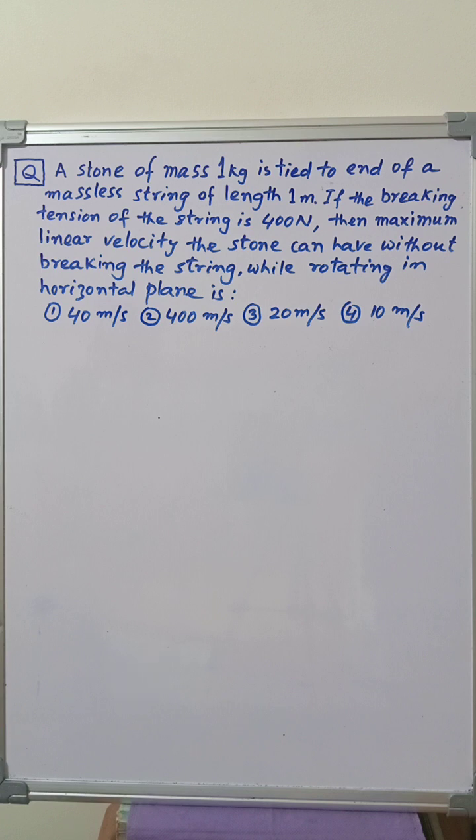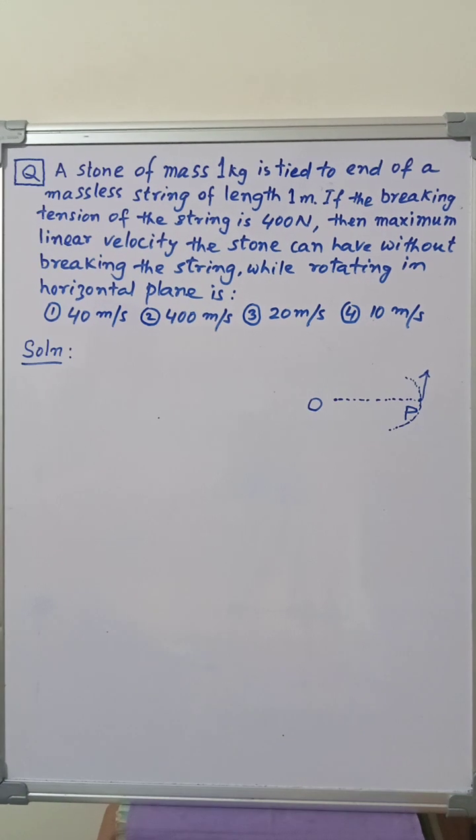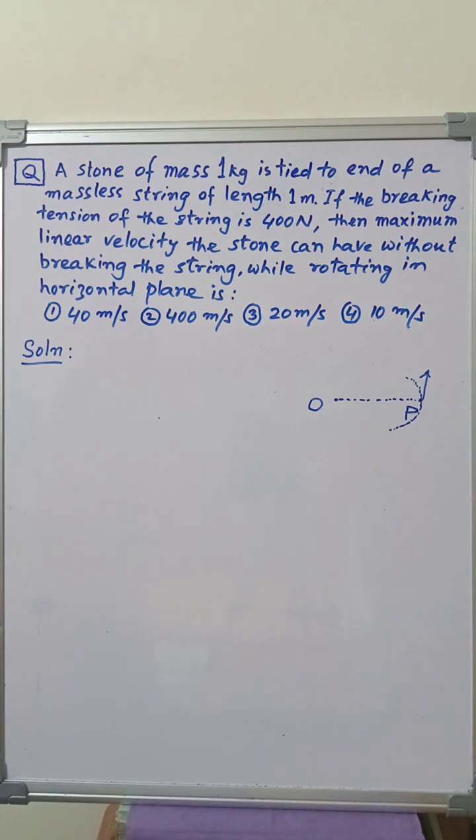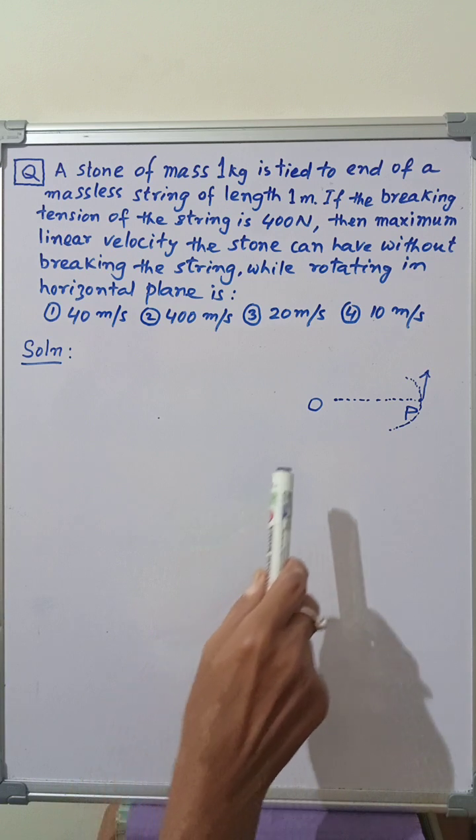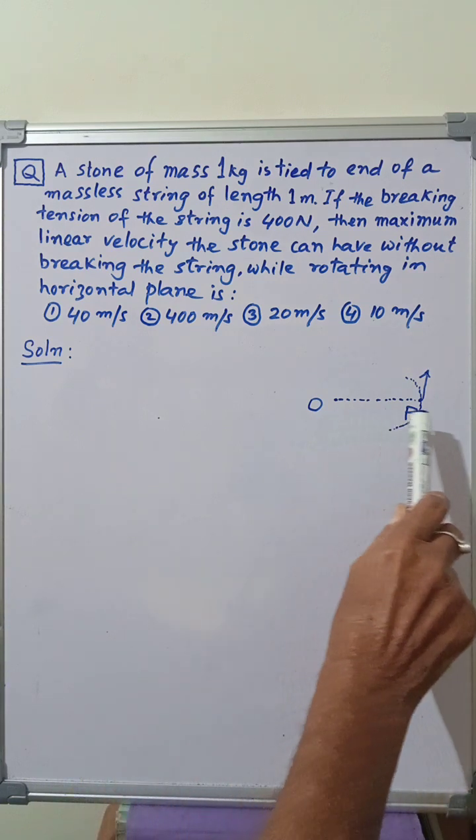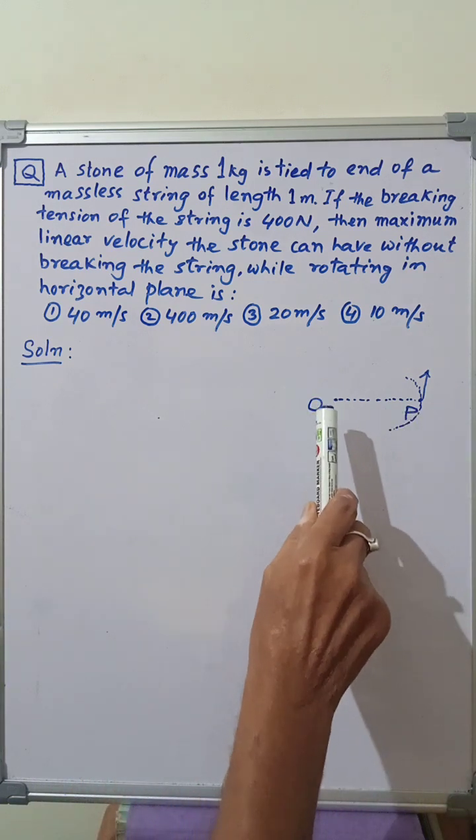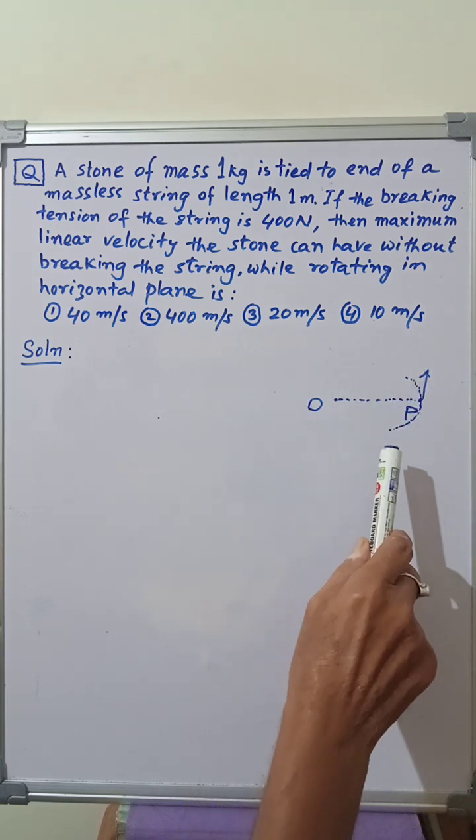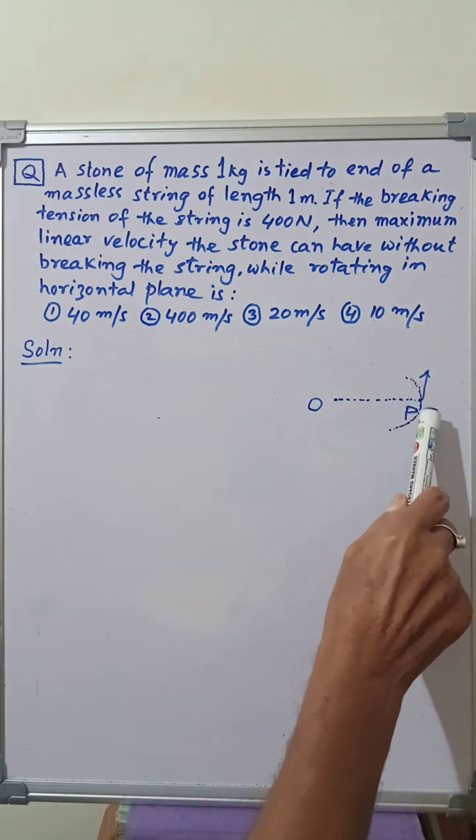Now for the solution. We have drawn a figure to understand the problem better. The length of the string is OP. O is the center of the circular path in which the stone is rotating. The stone is tied at the end P.